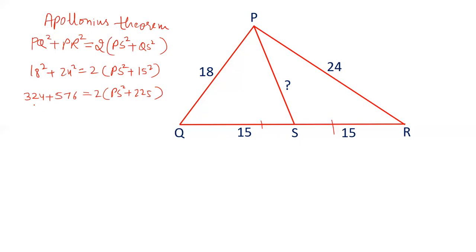The sum of these two is 3 and 5, 8, 900 by 2 equals PS square plus 225. This is 450 minus 225 equals PS square, that is 225 equals PS square. So PS equals under root 225, PS equals 15. So the length of PS is 15 centimeters.